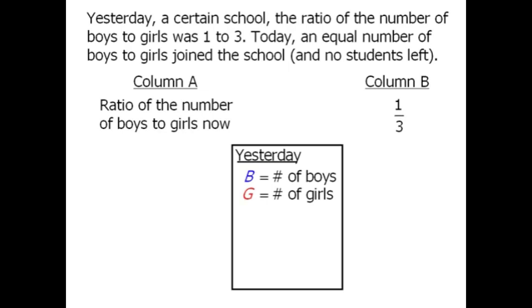Now the question tells us that the ratio of boys to girls yesterday was 1 to 3. So we can write the following equation. At this point, if we cross multiply, we create the equation 3B equals G.